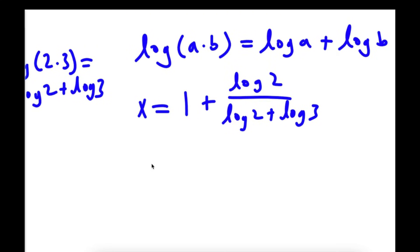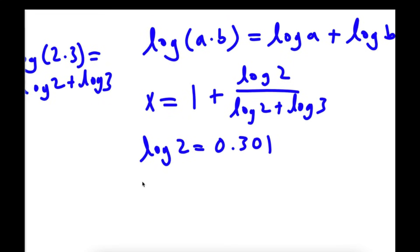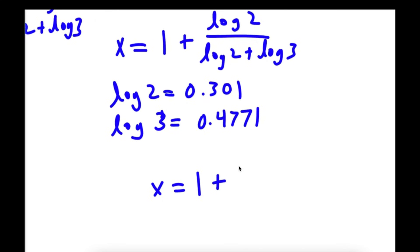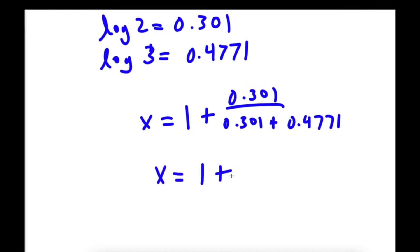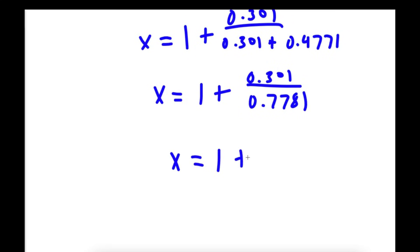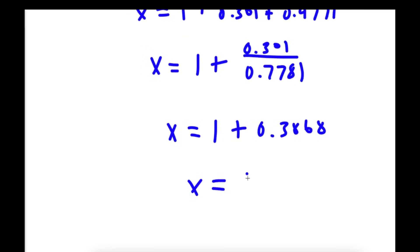Now the value of log 2, if you plug this into a calculator, is approximately 0.301. So x equals 1 plus log 2, which is 0.301, over log 2 plus log 3, which is 0.301 plus 0.4771. So now I have x is equal to 1 plus 0.301 over 0.7781. Now 0.301 over 0.7781 is 0.3868. And finally, 1 plus 0.3868 is 1.3868.